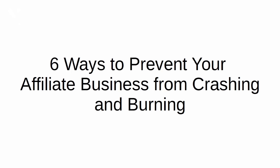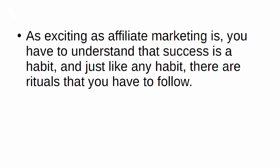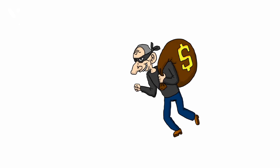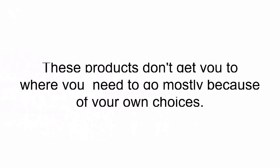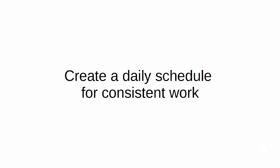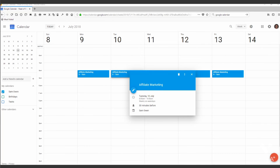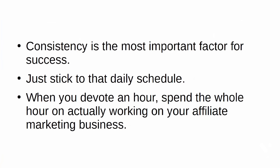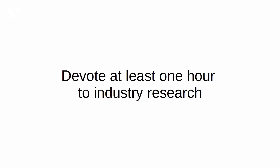Six ways to prevent your affiliate business from crashing and burning. Success is a habit and, like any habit, there are rituals you have to follow. It's very easy to get excited about making money online and have very little to show for it. If the choices you're making are not leading you where you want to go, you need to start making new choices. Create a daily schedule for consistent work: even if you have only one hour to spend on affiliate marketing every single day, do it — stick to that one hour regardless of how you feel. Consistency is the most important factor for success. Devote at least one hour to industry research every single day.